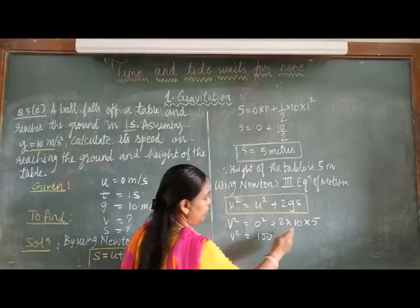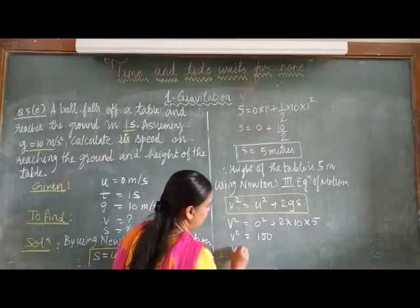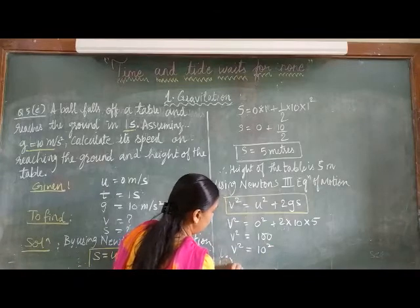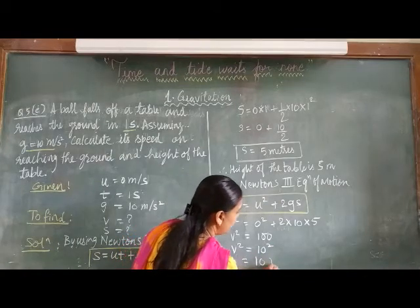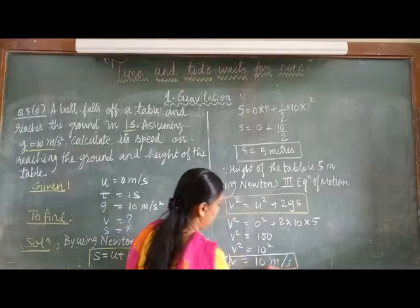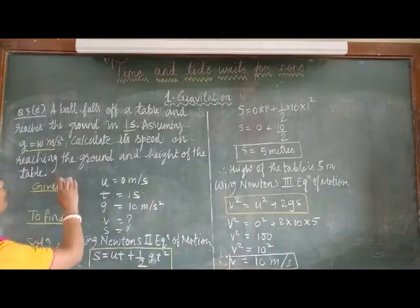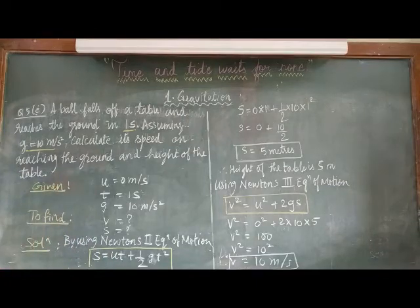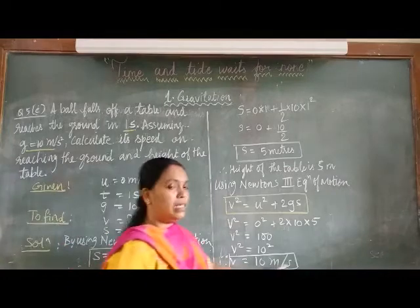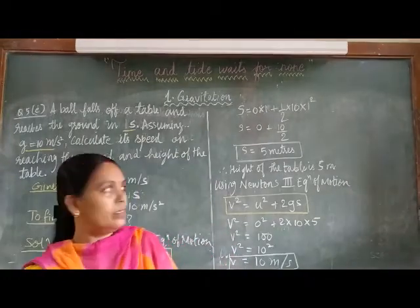So, V square is equal to 100. Therefore, V equals to 10 meters per second. That is, the speed of the object on reaching the ground is 10 meters per second. Right answer.